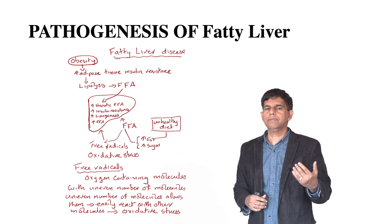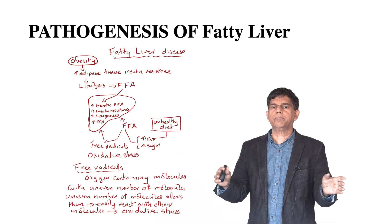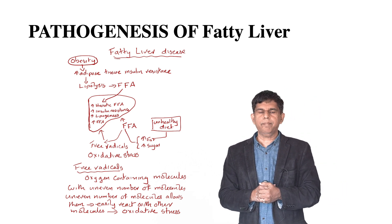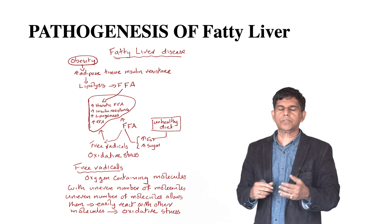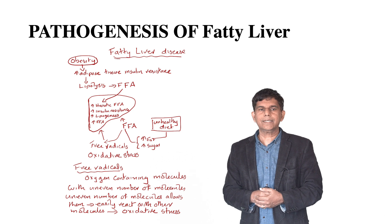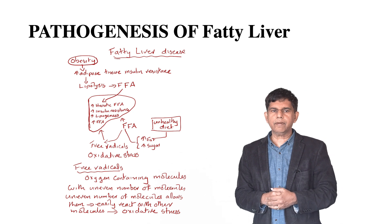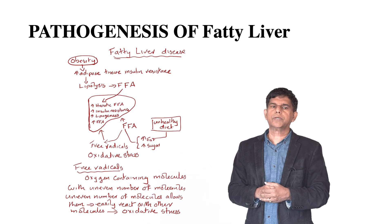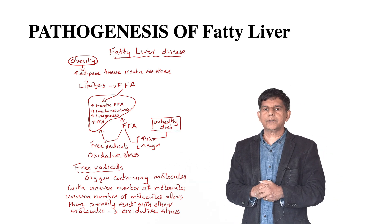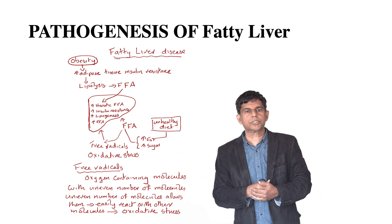In fatty liver disease, the main driver is obesity, which leads to adipose tissue insulin resistance, lipolysis, and the formation of free fatty acids — causing significant damage. Unhealthy diet also contributes, increasing free fatty acids, sugar, and free radicals, resulting in oxidative stress. Free radicals are oxygen-containing molecules with an uneven number of electrons, making it easy for them to combine with other molecules, attack the body, and cause oxidative stress.